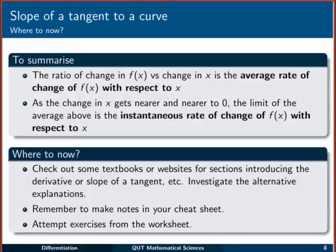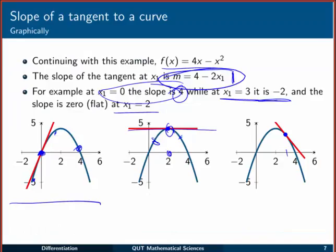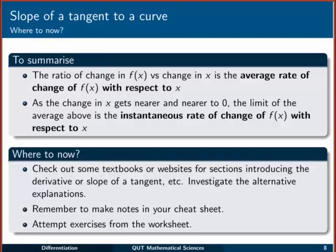To summarize: the change in f(x) versus the change in x is the average rate of change of f(x) with respect to x. But as that change in x — delta x — gets nearer and nearer to zero, the limit of that average is the instantaneous rate of change, or the slope of the tangent line. What we'll talk about more in this set of videos is figuring out that instantaneous rate of change without having to go through this delta x process — there are lots of rules that will help us do that. Move on to the next set of videos, and check out some textbooks to look at this tangent slope investigation. Make sure you're making notes in your cheat sheets and attempting the exercises from the worksheets.